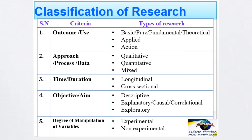The fourth criterion is the objective or aim of the research. As per the objective or aim criterion, research can be classified into descriptive, explanatory, causal, correlational, and exploratory research.